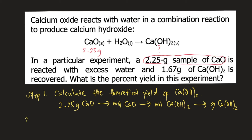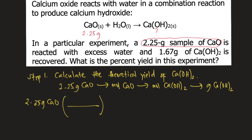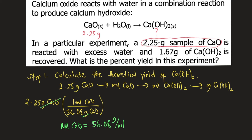We have 2.25 grams of calcium oxide. To convert this into moles, we need the molar mass of calcium oxide, which is 56.08 grams per mole. So we put 1 mole on top and 56.08 grams at the bottom, so that grams of calcium oxide cancel and we now have moles of calcium oxide.